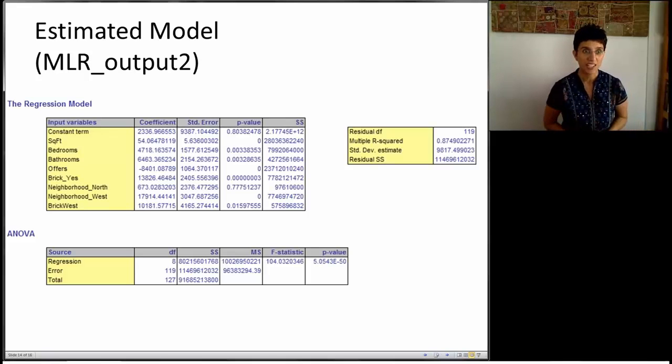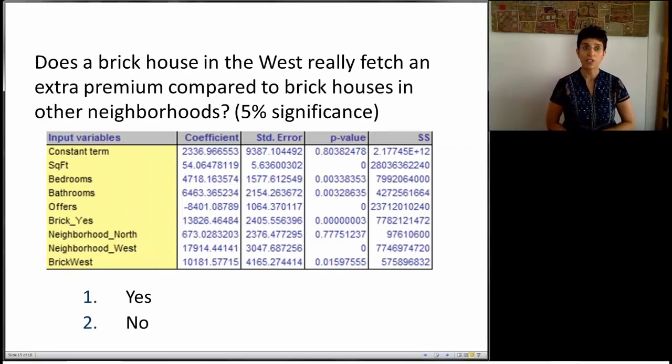We get a coefficient for this interaction term that is 10,181. Remember the question is, does the claim of the real estate really materialize? Is this true in the population? Can we use this number here, or any other number on this output, to ask that question and test it with statistical tools? So does a brick house in the West really fetch an extra premium compared to brick houses in the other neighborhoods? Suppose we're using the standard 5% significance. By the way, there's no real meaning to 5% significance. This is just some historic standard, but there's no good reason to use 5%. That's just the risk you're taking. So stop here and see if you can figure out whether you can test this hypothesis with this new model that we just created.